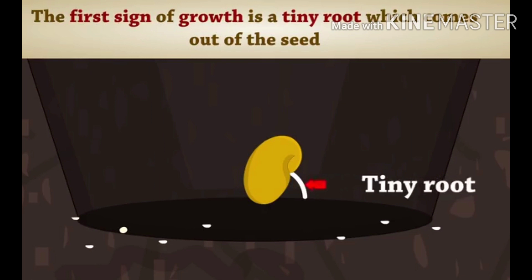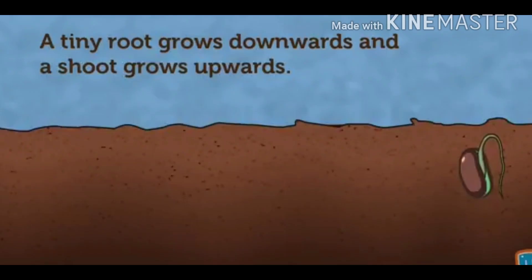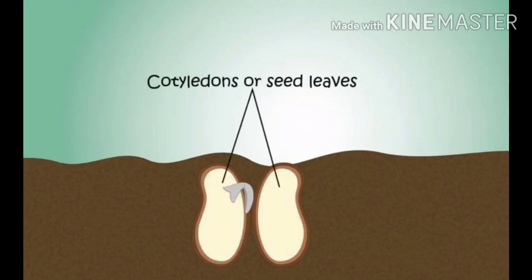Third, soon the shoot of the baby plant starts growing. Food for the growth of the baby plant is provided by the seed leaves.